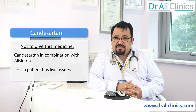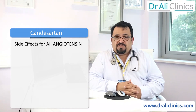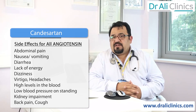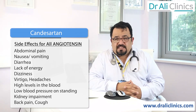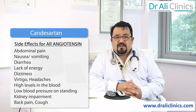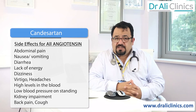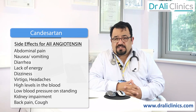The common side effects of all angiotensin receptor blockers are abdominal pain, nausea, vomiting, and diarrhea. Lack of energy, also known as asthenia, is also reported. Some patients report dizziness, vertigo, and headaches. Remember, potassium levels need to be monitored as ARBs can cause high potassium levels in the blood.